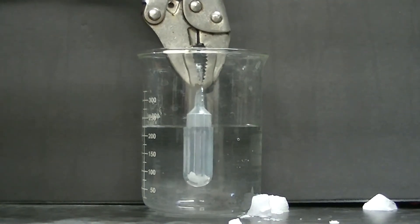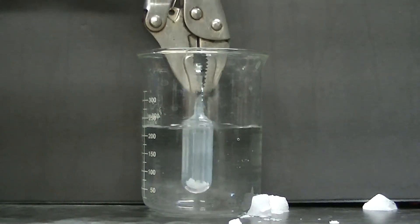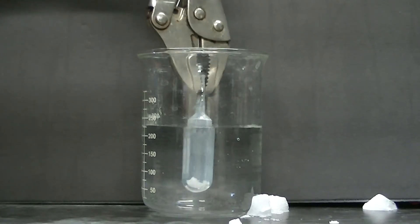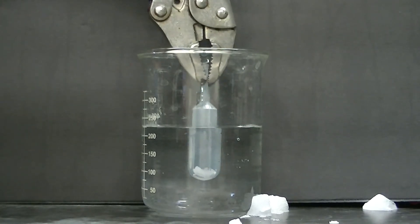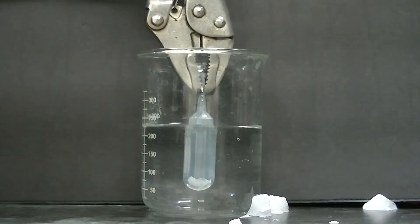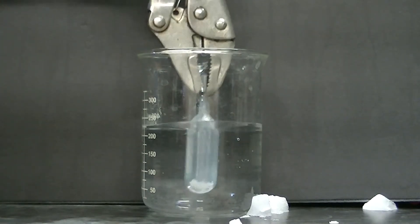And as the dry ice sublimes inside the pipette, the pressure inside the pipette is going to build up. And we should see that white solid material, at some point it should melt.